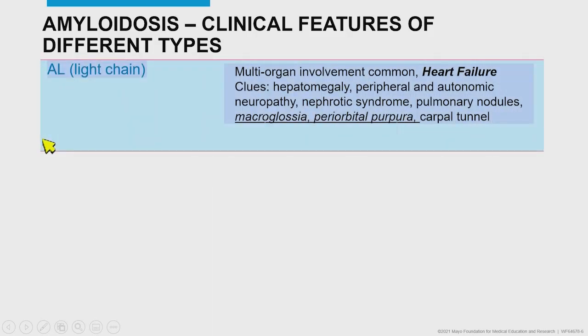So what is amyloid, and what are the different types and features one needs to think about? Although there are at least 20 different types of amyloid, there are three main types that cardiologists typically think about. The traditional type we learned about in training was AL amyloid — a multi-organ disease where heart failure is common. These patients have peripheral and autonomic neuropathies, nephrotic syndrome, carpal tunnel, macroglossia, and periorbital purpura.